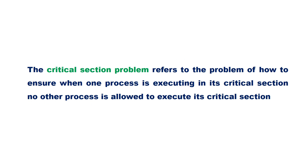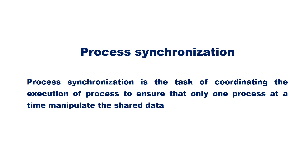The critical section problem refers to the problem of how to ensure that when one process is executing in its critical section, no other process is allowed to execute its critical section. Synchronization deals with developing techniques to avoid race conditions. Process synchronization is the task of coordinating the execution of processes to ensure that only one process at a time manipulates the shared data.